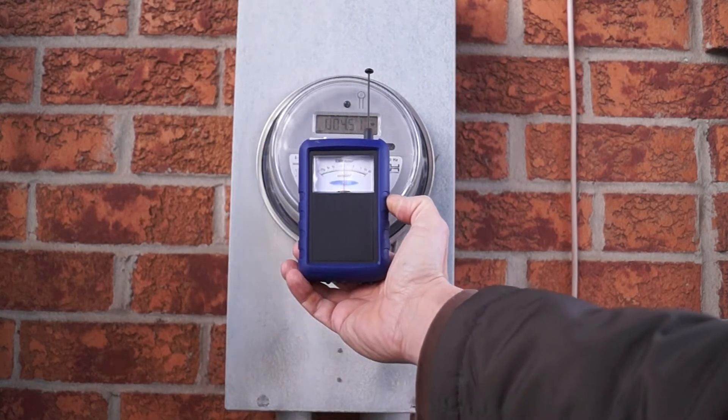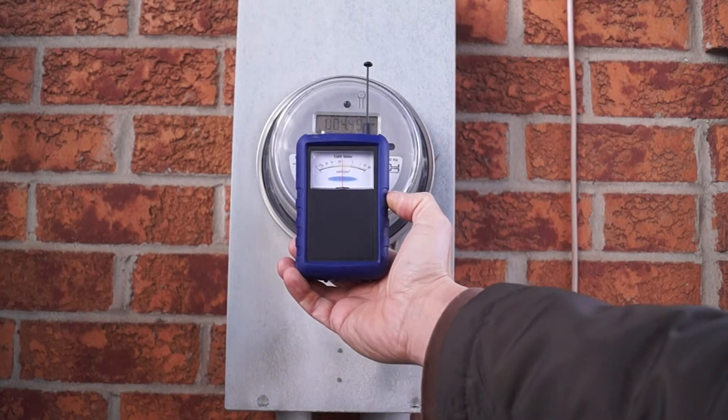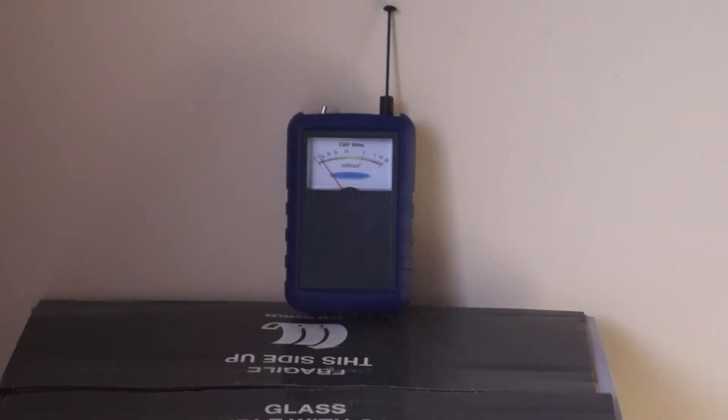Now we're going to check that. The smart meter is directly behind the wall on the outside of the building. The meter is measuring about 0.01 microwatt per square centimeter.